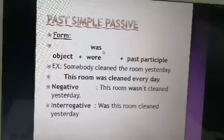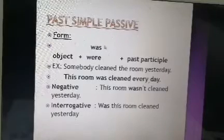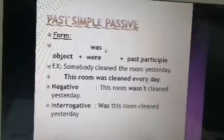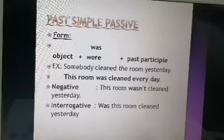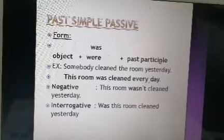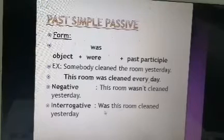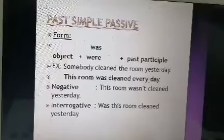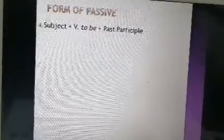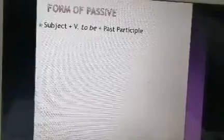To form a passive question, start with 'was' or 'were,' then the object, and then the past participle. For example: 'Was this room cleaned yesterday?' Don't forget the question mark.